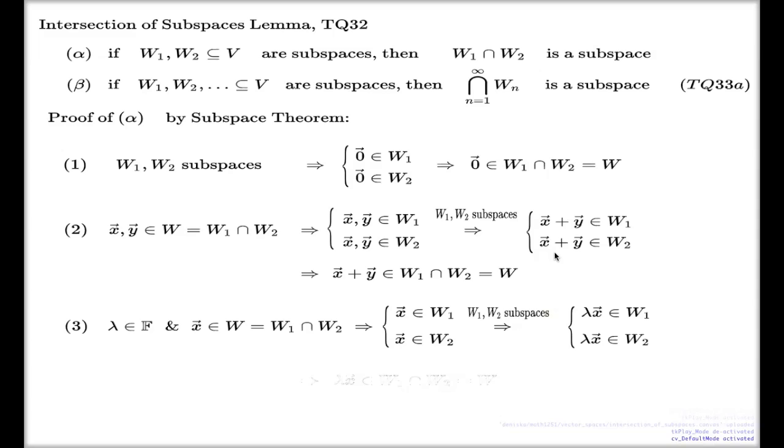See, my step is carefully referenced to the assumption that w1 and w2 are subspaces. And then we have a vector which belongs both to w1 and w2. From here we conclude that such a vector must be in the intersection, which we call w. And that's the third criterion, which has been checked as well. And that's the finish of part alpha of this intersection of subspaces lemma.